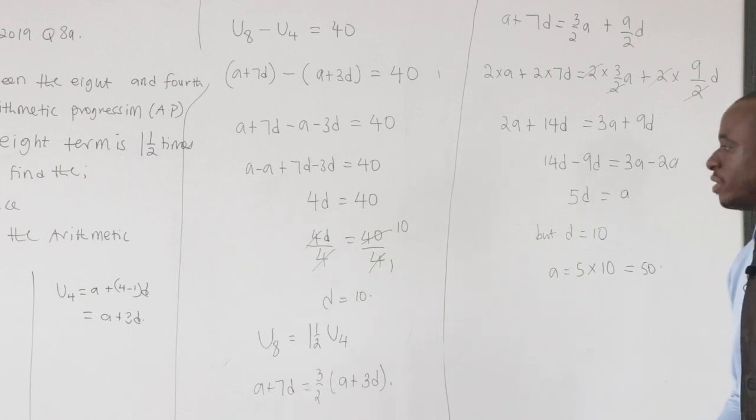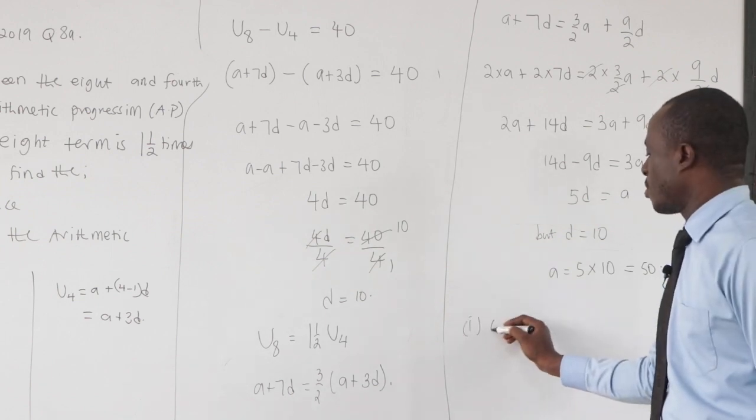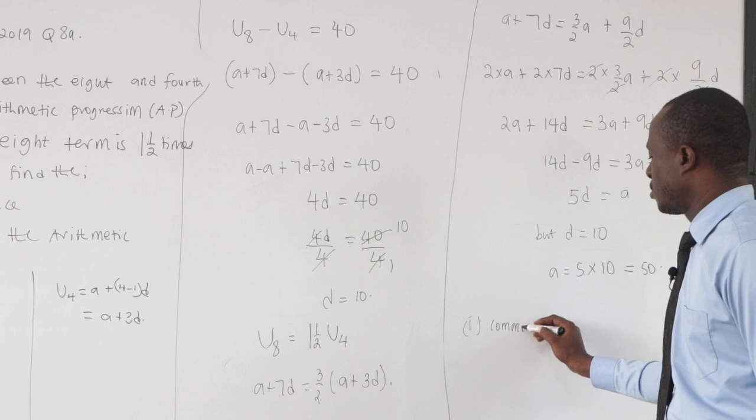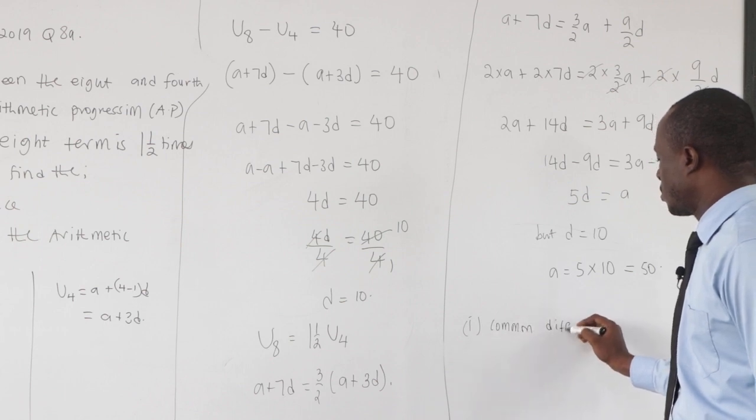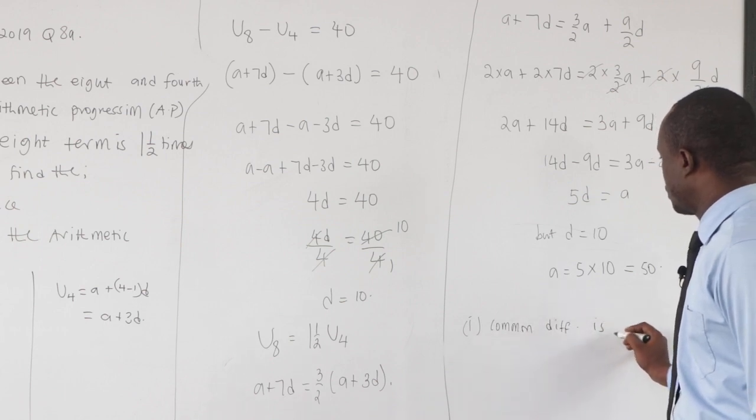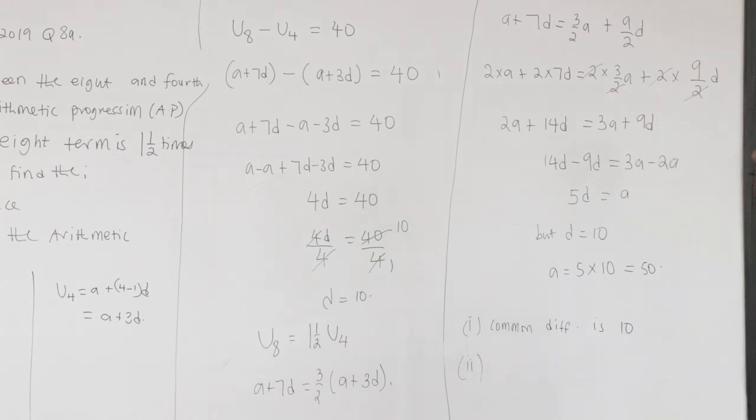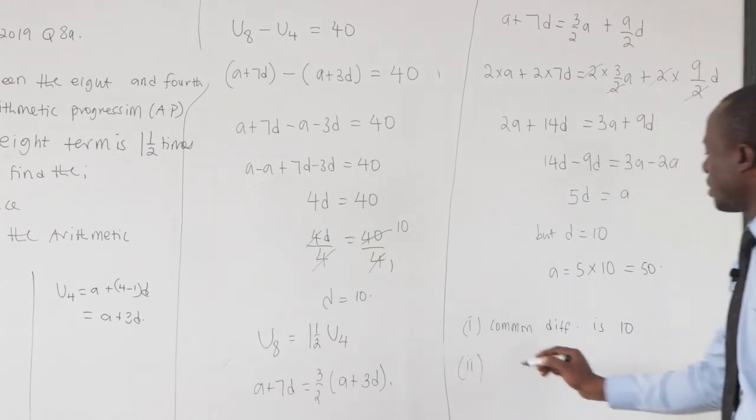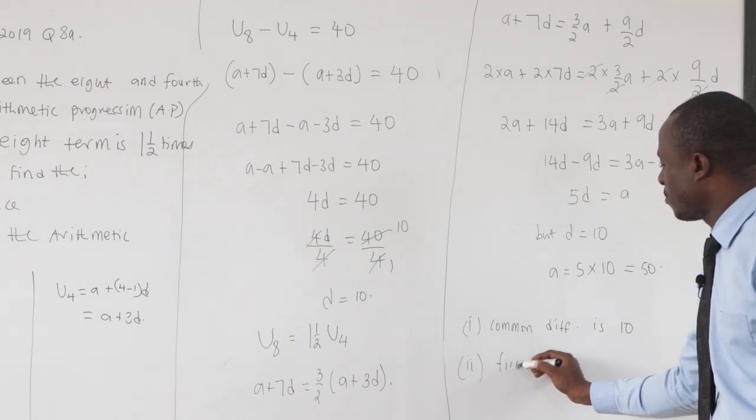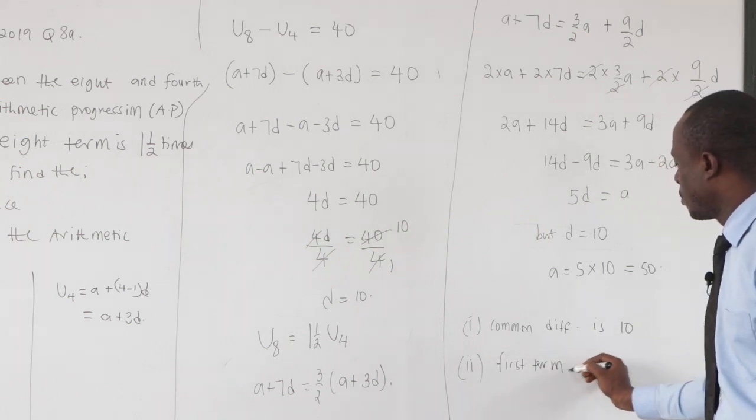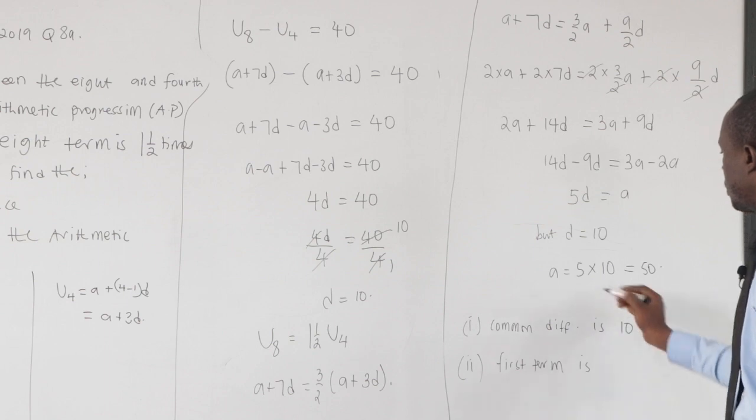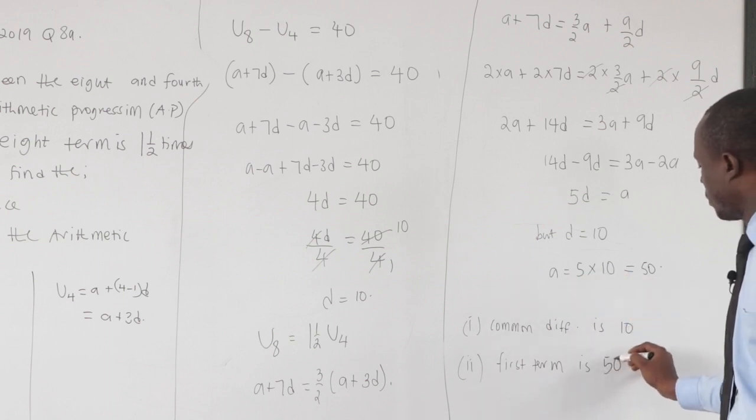The question is we should find the common difference. Our common difference is 10. And then we should find the first term of the arithmetic progression. The first term a is 50.